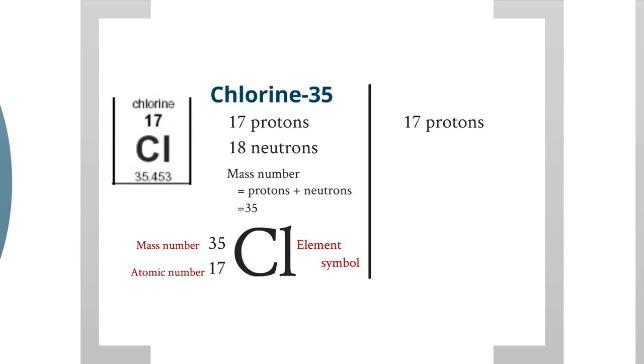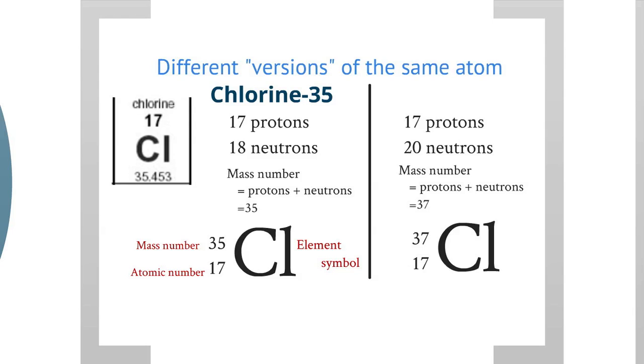Now there exists another type of atom of chlorine which has 17 protons and 20 neutrons. That has a mass number of 37: 17 plus 20 equals 37. So this nuclide notation looks like that, and that is called chlorine-37.